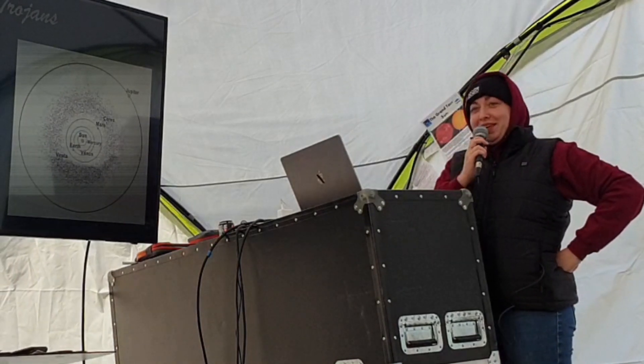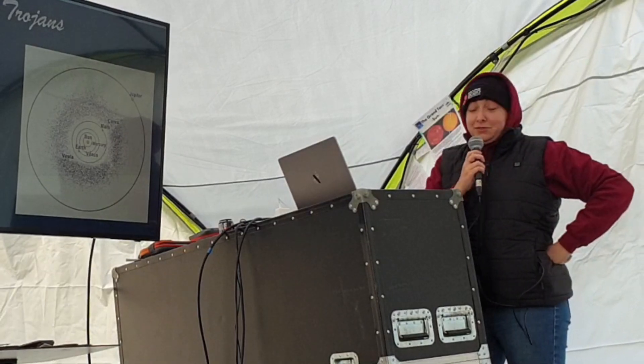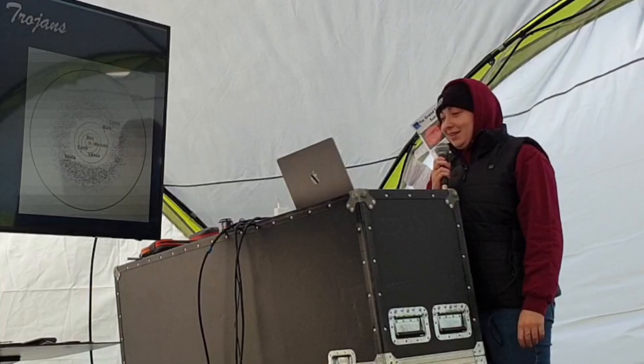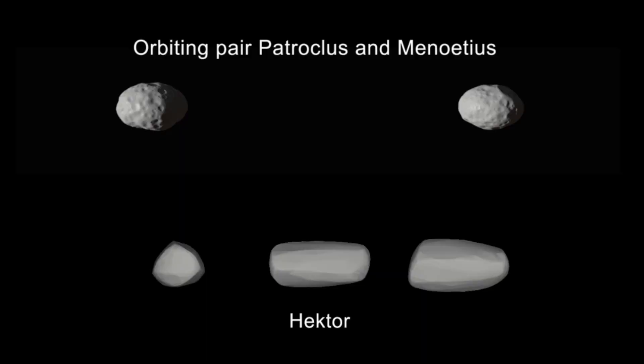A little bit of history: they are named for characters in the Trojan War. L4 has Greek names, L5 has Trojan names, but the first two that were ever discovered actually have the opposite names — so they're forever known as spies in the enemy camps. As for where the Jupiter Trojans come from, we don't know. We're not sure if these are relics left over from Jupiter's formation, or if they were captured during planet migration which happened early on in solar system formation.